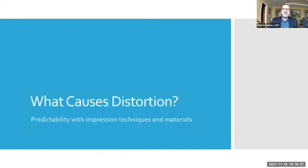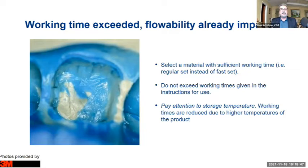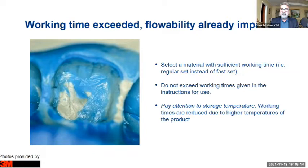What causes distortion? We want predictability with impression techniques and materials. One cause is exceeding the working time — flowability is already impaired when that happens. Select a material with sufficient working time, whether fast set, medium set, or slow set, and don't exceed that working time. Follow the instructions for use and pay attention to storage temperatures. Working times are reduced at higher temperatures — the hotter the temperature, the faster these materials set up, giving you less working time. So keep an eye on temperature; it has an effect.